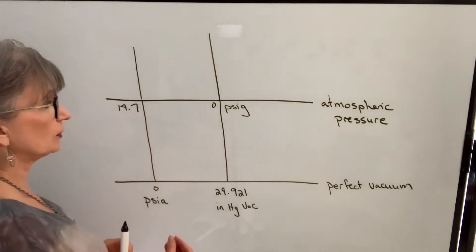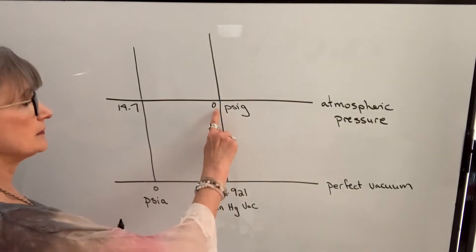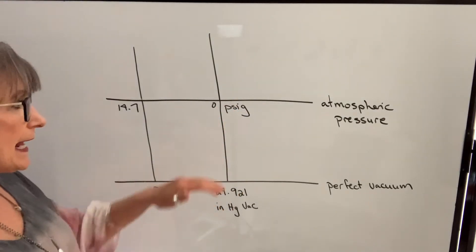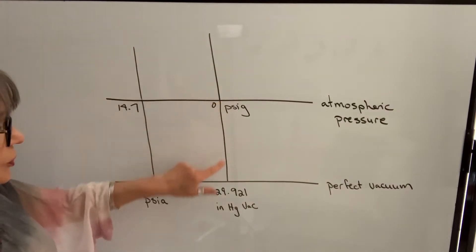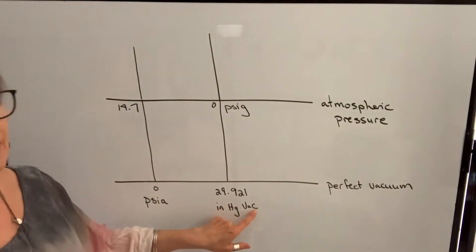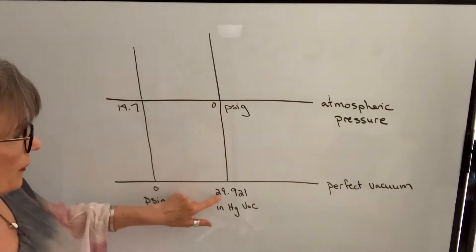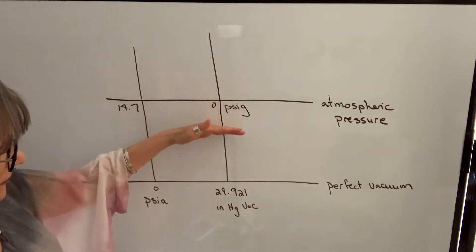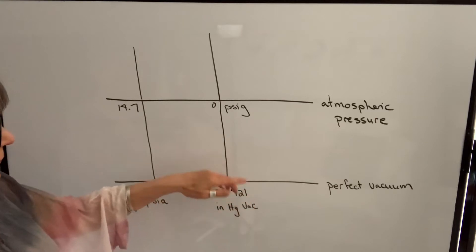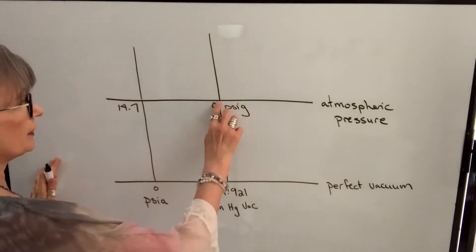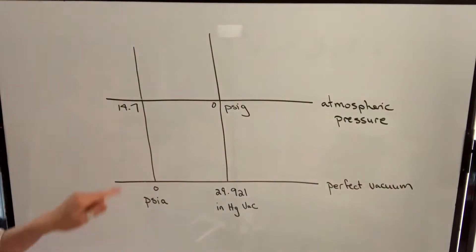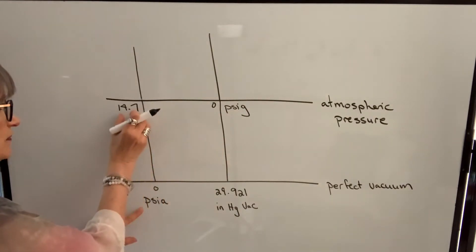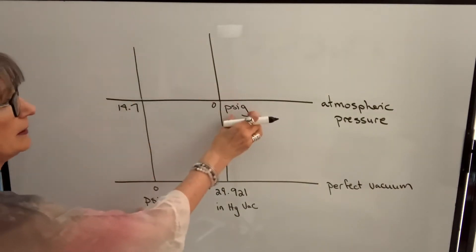If we look at a gauge, PSIG starts at zero at atmospheric pressure. Anything less than atmospheric pressure will measure as inches mercury vacuum, going from zero to 29.921 as pressure decreases or vacuum increases. So our numbers go from zero to 29.921 on the vacuum scale, while PSIG starts at zero and continues upward.